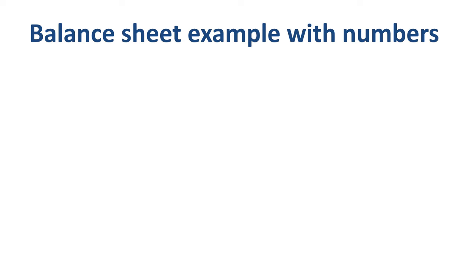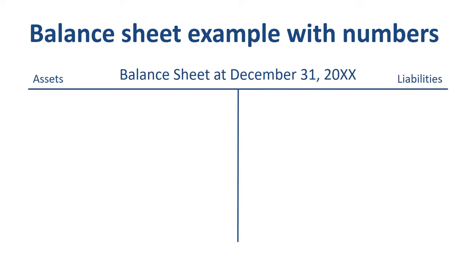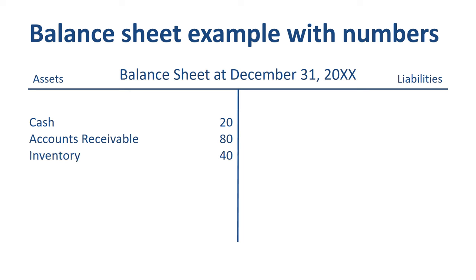If we fill in the balance sheet with an example of accounts and amounts, these are some of the terms you would often come across. In assets: cash, accounts receivable — invoices sent to your customer that they have not paid yet — inventory, goods that you hold to sell, and plant and equipment, fixed assets, buildings, and machines.